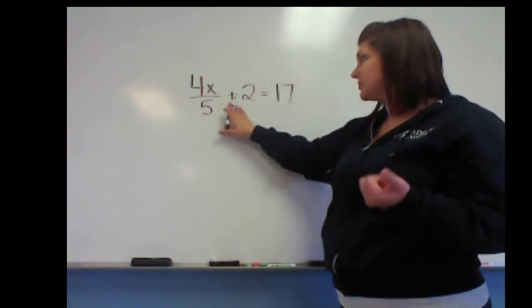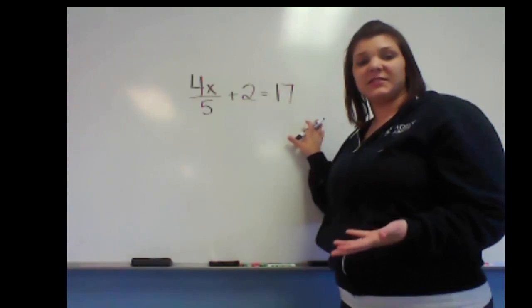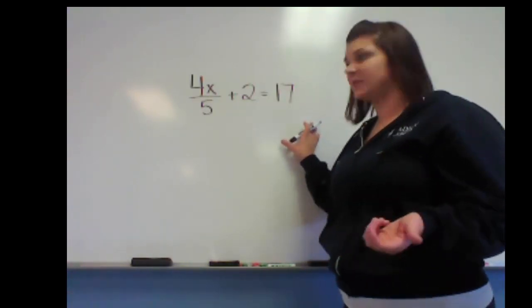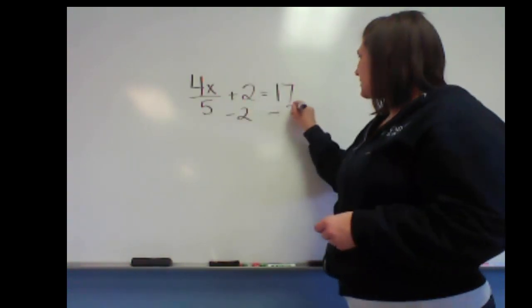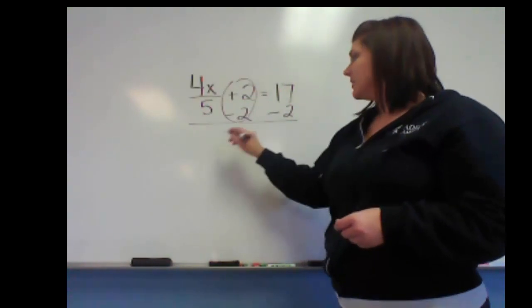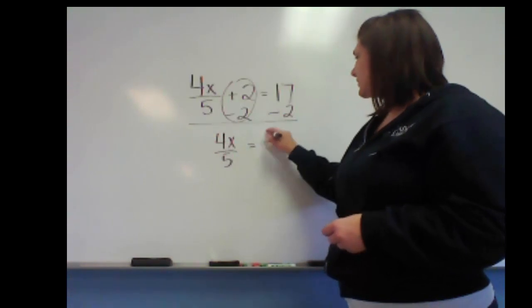So we can imagine if there's 2 unit tiles on the left, 17 unit tiles on the right, I could just take that balance set of 2 from both sides and simplify my equation. So let's start with that. So let's say we want to take 2 away from both sides. We're going to subtract 2 from both sides. That's going to give us 0, so we're left with 4x over 5 equals 15.